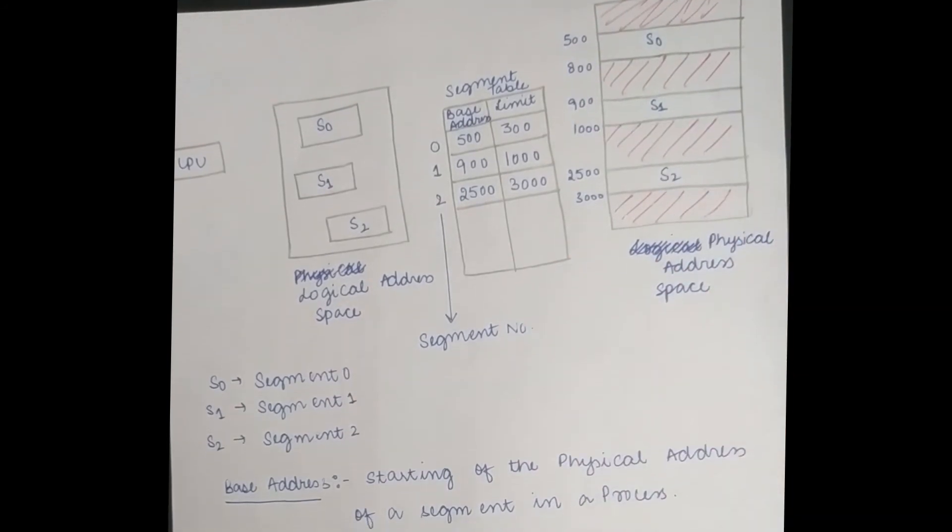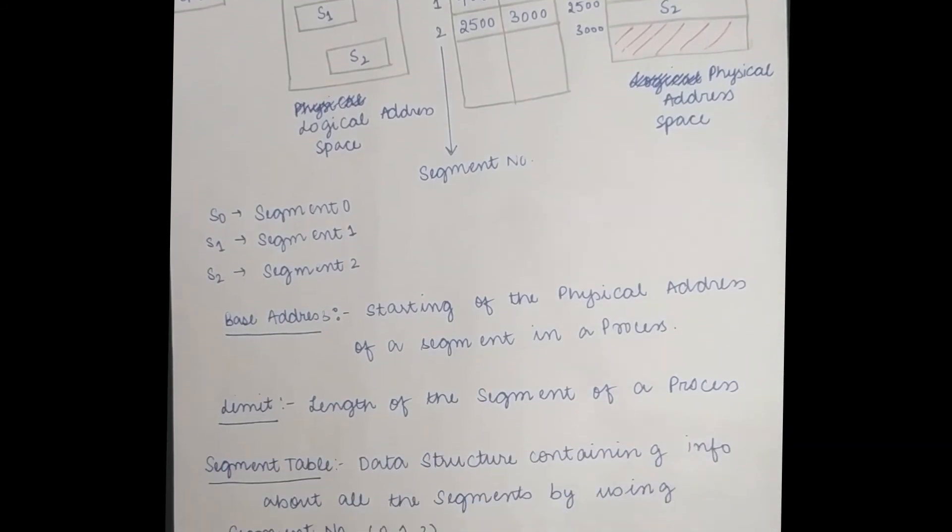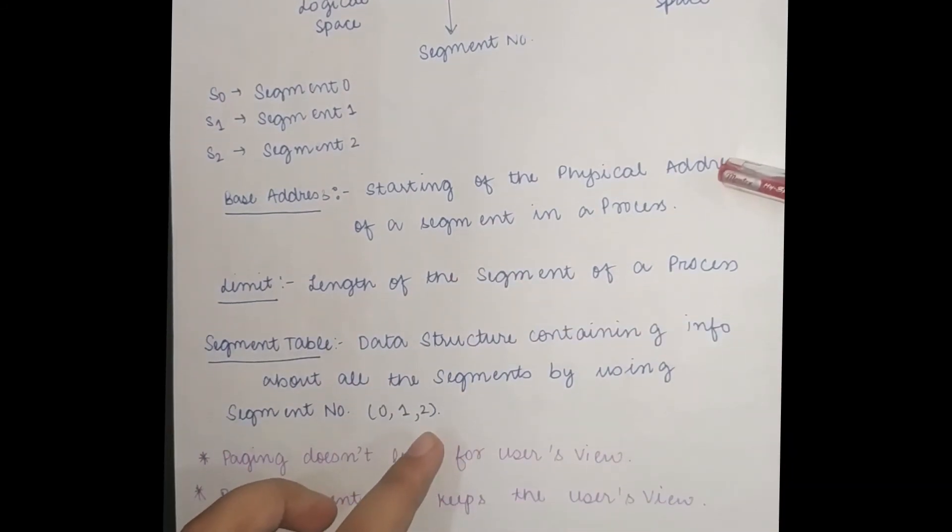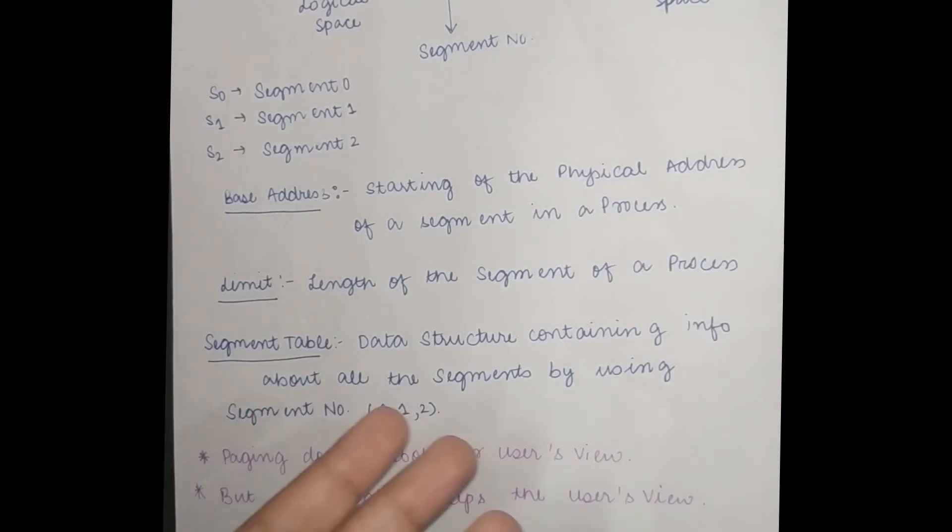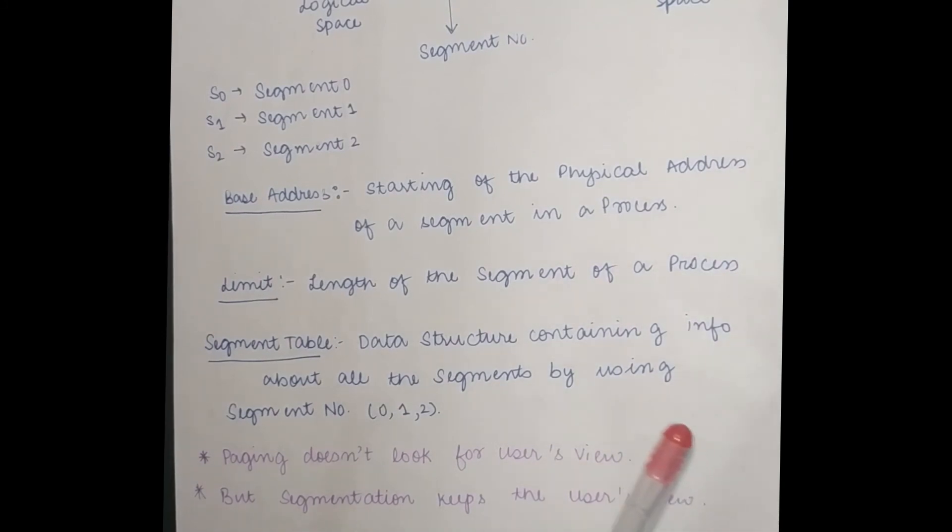So these were the parts of like segmentation different parts: base address, starting of the physical address, length of the segment of a process is defined as the limit, and segment table is basically data structure where all the segment information is stored and then the segment number or anything.